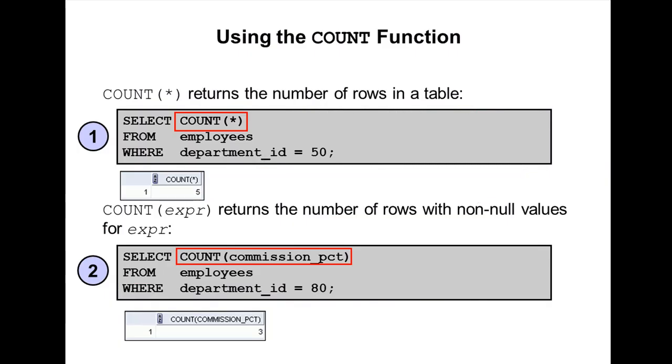Hi, now I'm going to explain count functions in Oracle. COUNT star returns the number of rows in a table. The COUNT star function returns the number of rows in a table that satisfy the criteria of the SELECT statement, including duplicate rows and rows containing null values in any of the columns.